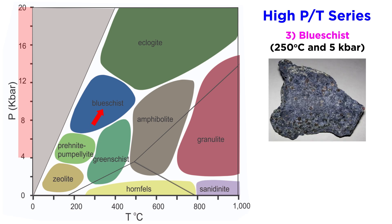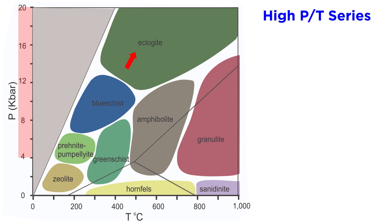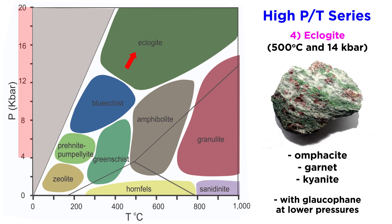From here we move into the blueschist facies at around 250 degrees Celsius and 5 kilobars. The blueschist facies gets its name from the blue color of the amphibole glaucophane, which is abundant in these rocks. Other minerals in blueschists are garnet, epidote, and aragonite, which is the high-pressure polymorph of calcite. As the pressure and temperature are increased to around 14 kilobars and 500 degrees Celsius, we move into the eclogite facies, which is dominated by omphacite, garnet, and kyanite, and which exists with glaucophane at lower pressures.